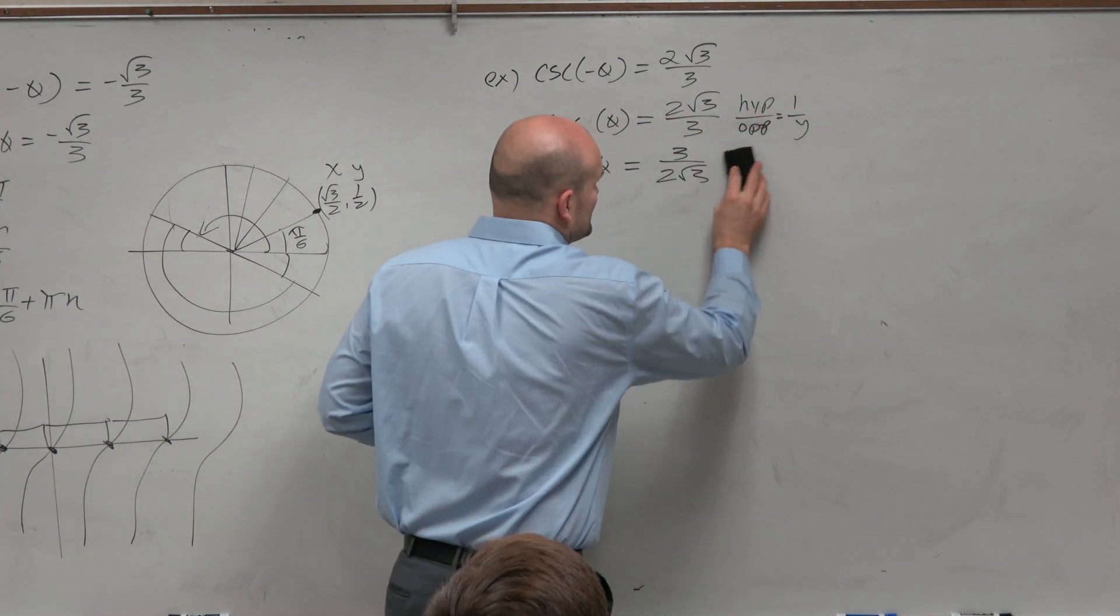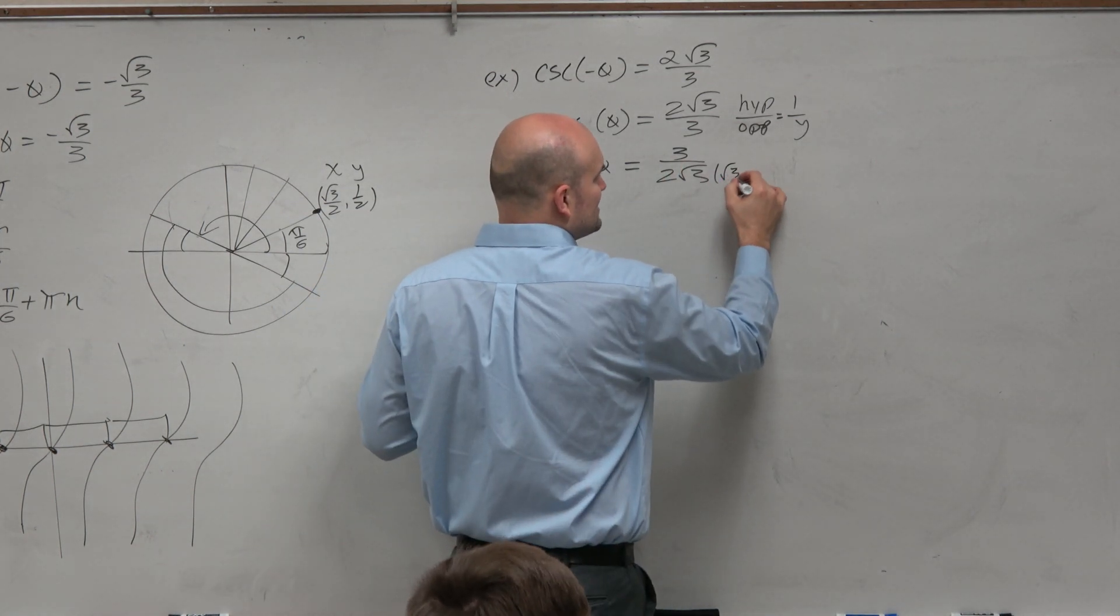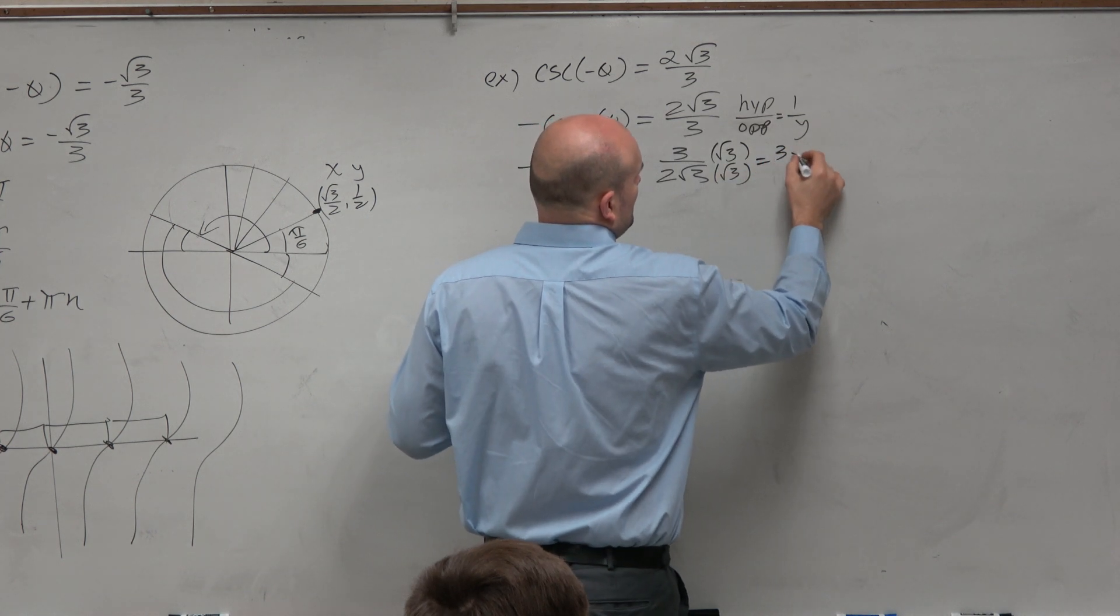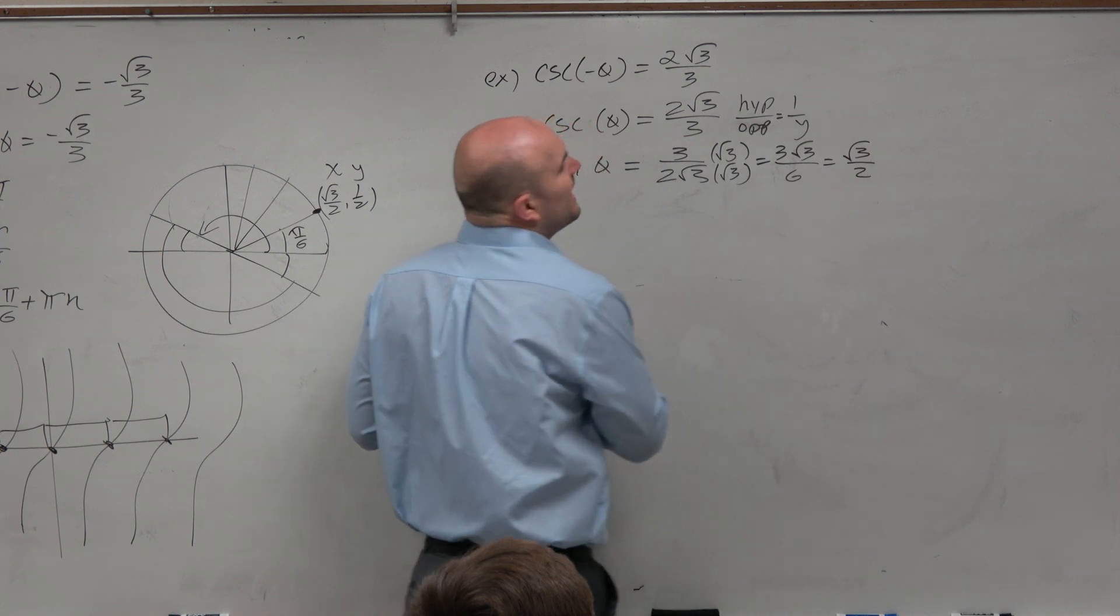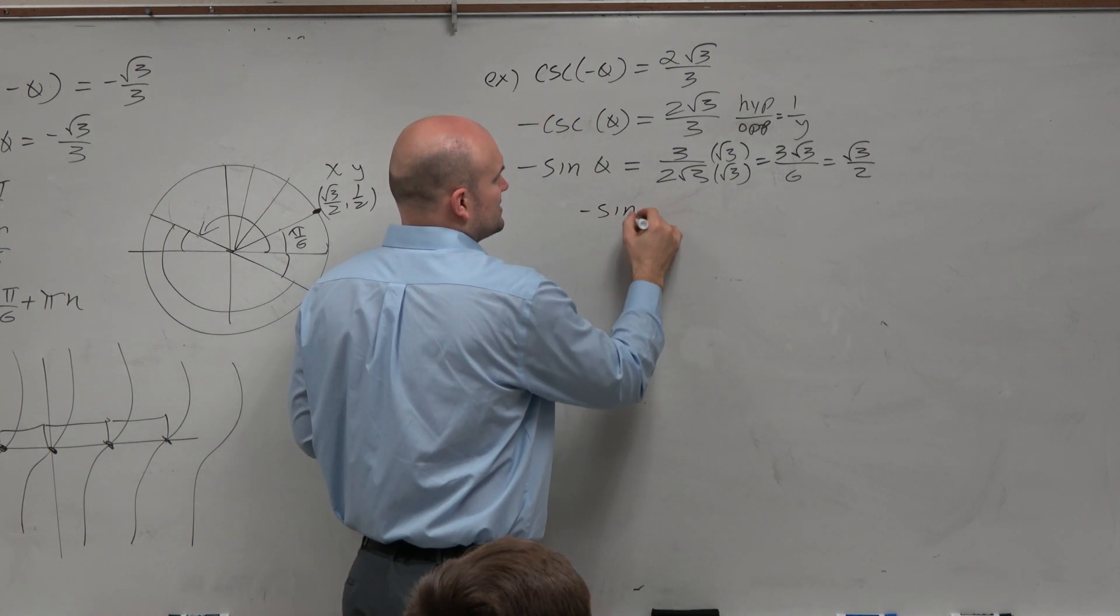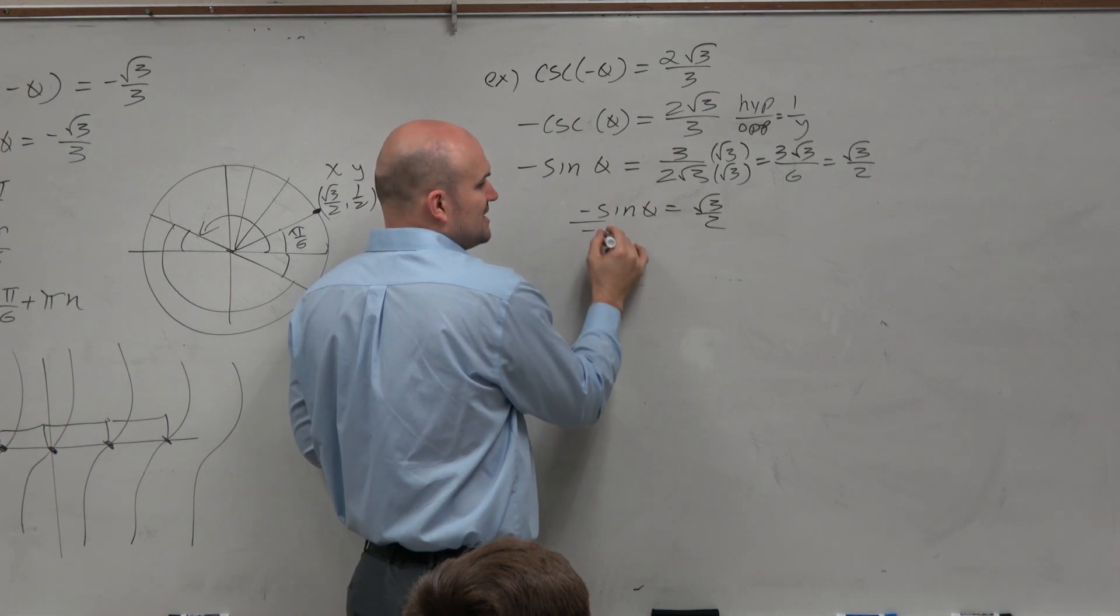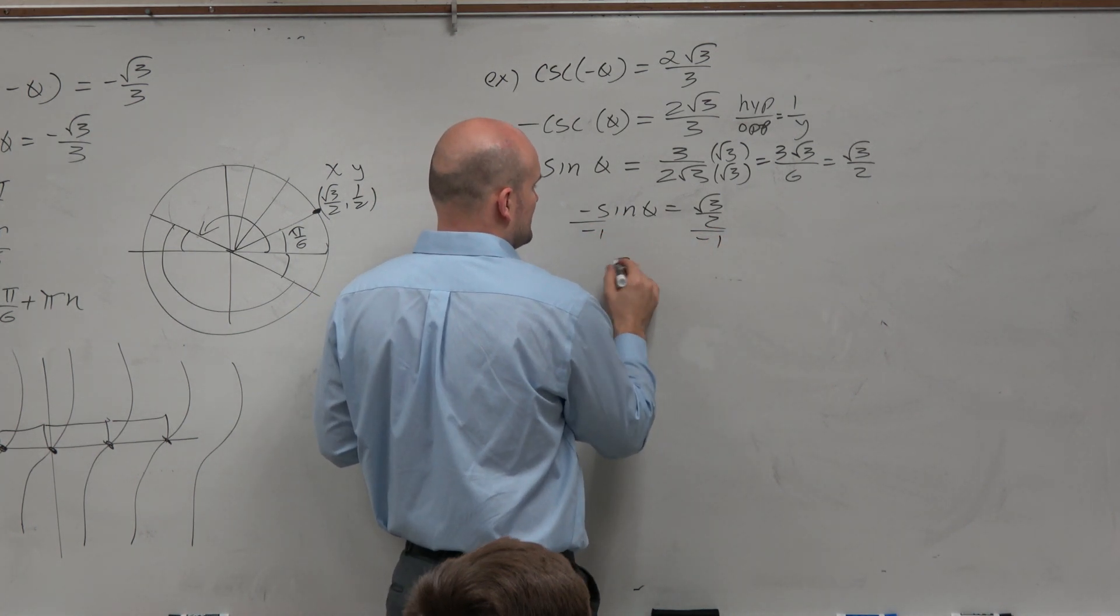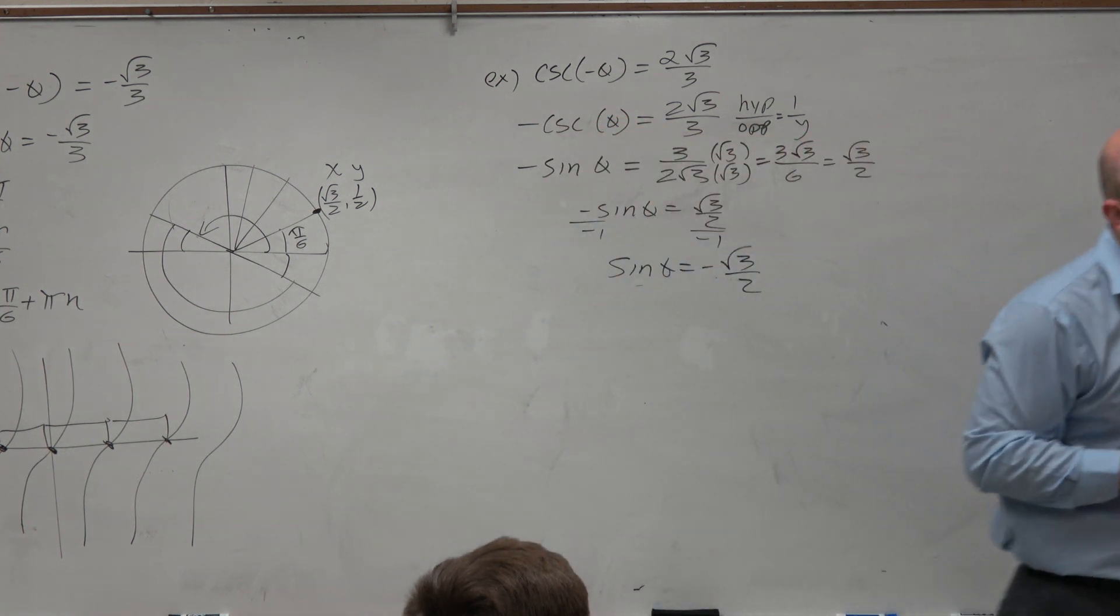Now, I've got to do this, because still, we don't recognize this y-coordinate here. So when we rationalize the denominator, ah, that looks a little bit more familiar, doesn't it? And then now we have a negative on the outside. So now I can simplify that out. So I have sine of theta equals negative square root of 3 over 2.